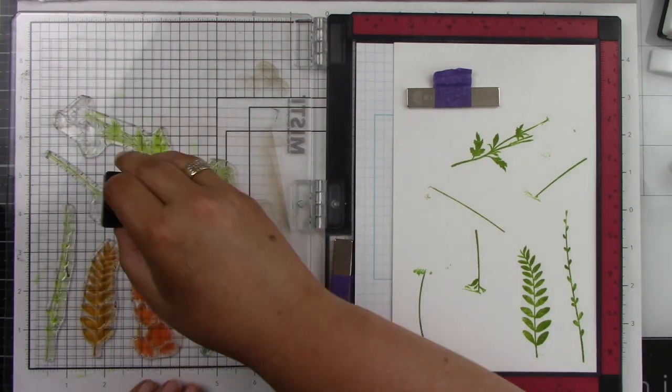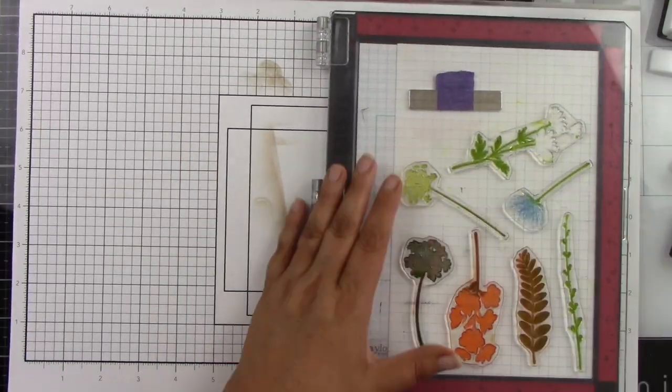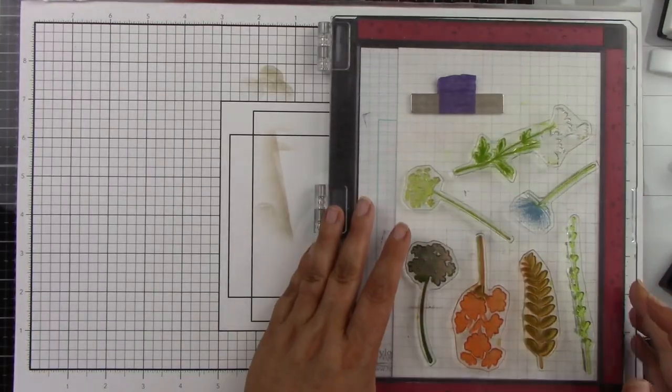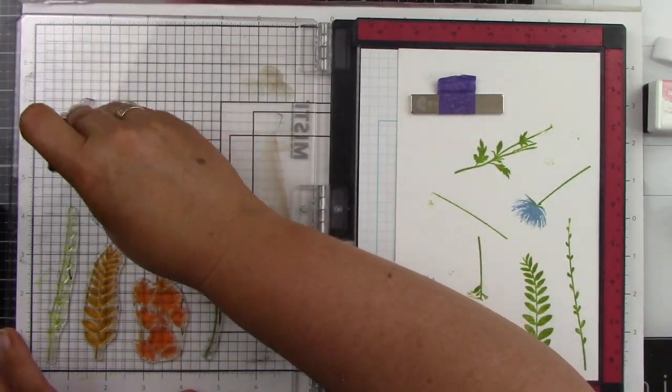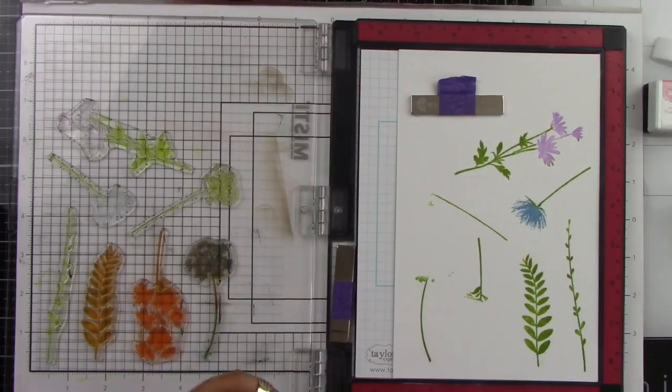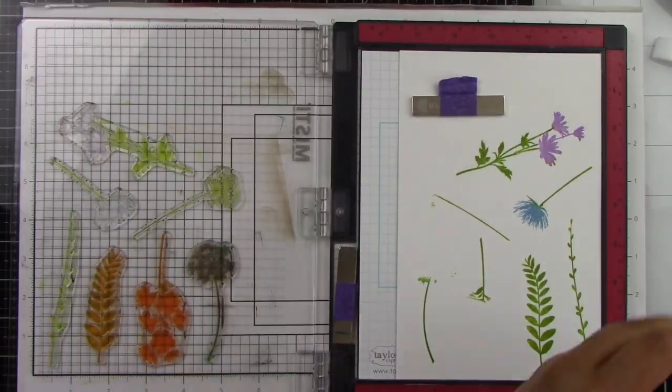I don't mind if a little bit of the green gets into the flower area. I think it's totally fine, and you're not even going to notice it. But if that's something that bothers you, you can mask off the flower area with some low-tack tape or sticky notes or whatever, and then stamp your images.